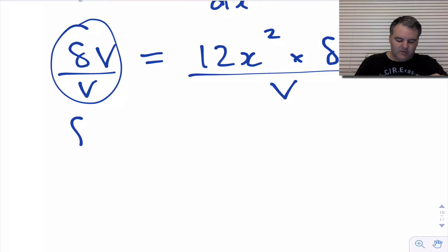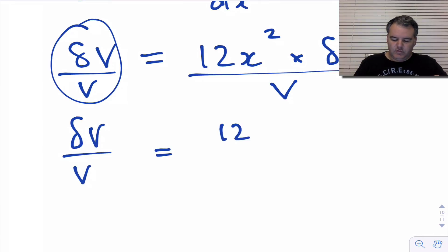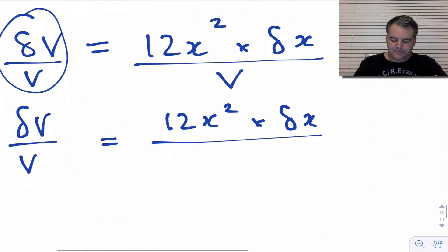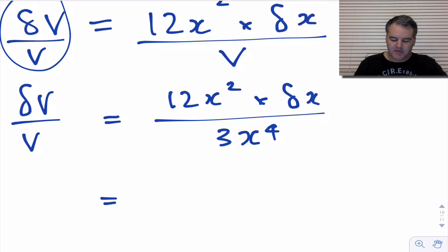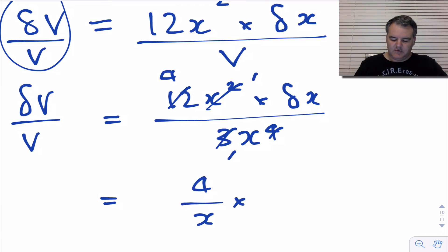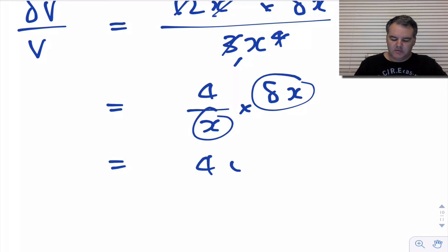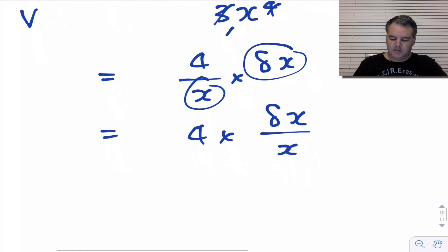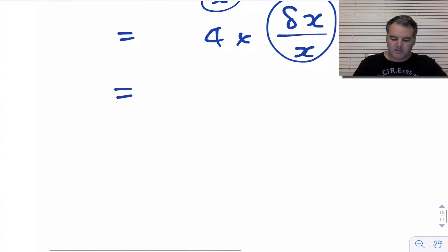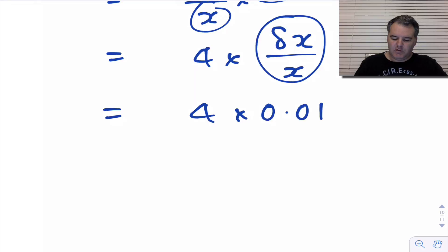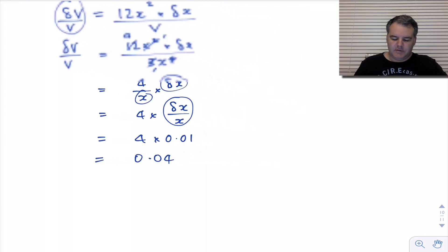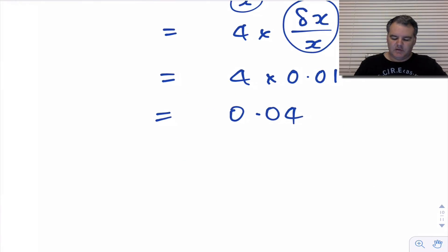So we divide both sides by V to get delta V over V — the percentage change in V — which equals 12x³ times delta x divided by V. We know V is 3x⁴, so simplifying: 12x³ over 3x⁴ gives 4 over x, and multiplying by delta x gives 4 times (delta x over x). Since delta x over x is 0.01, we get 4 times 0.01 = 0.04, so there is a 4% change in V.